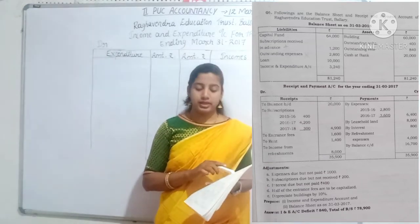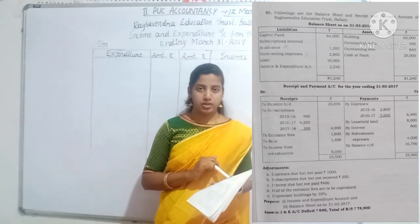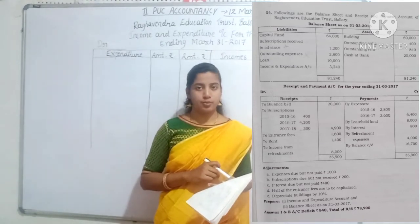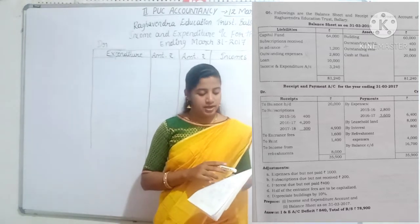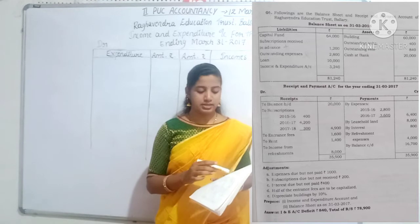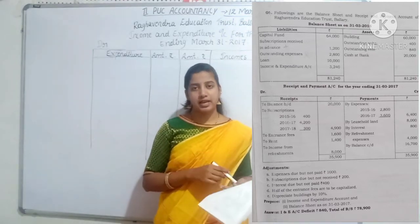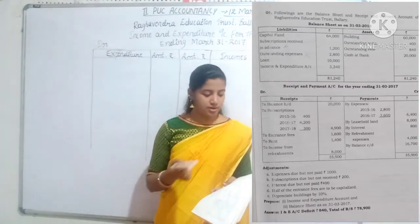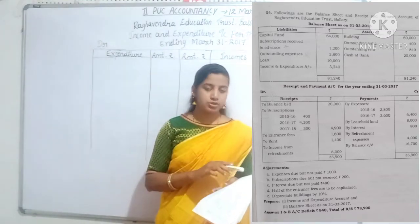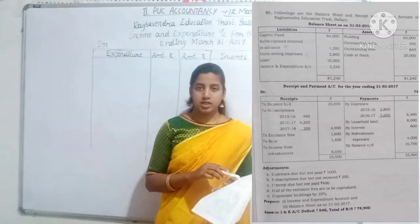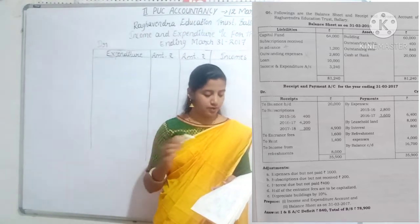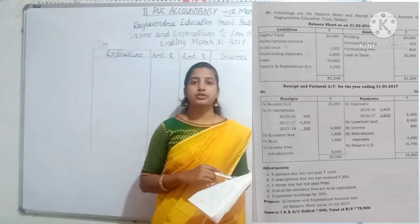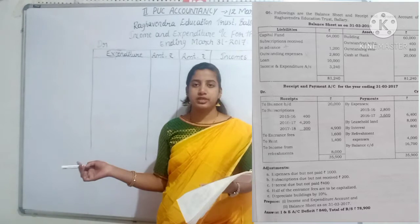Interest adjustment: interest due means outstanding current year interest amount is added. Next, refreshment expenses entry with balance carried down Rs. 16,700. Additional information: expenses due - add; subscription due - add; interest due - add; half of the entrance fee on income side; remaining half to capital fund. Depreciation on building at 10%: total building Rs. 60,000, so 60,000 × 10% = Rs. 6,000 goes to expenditure.